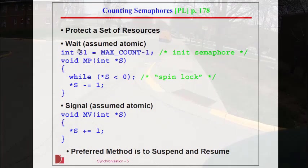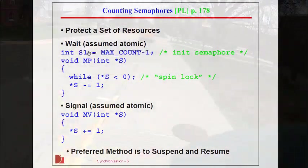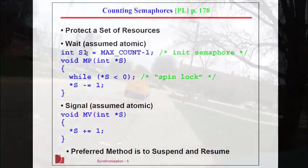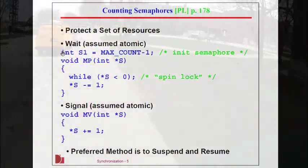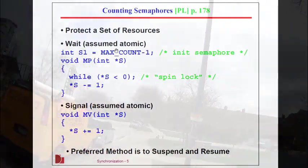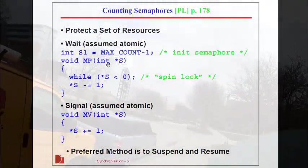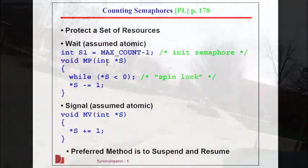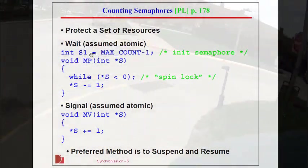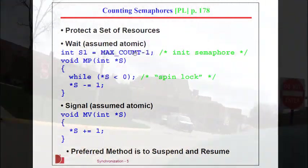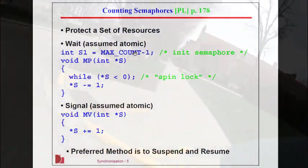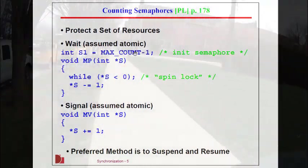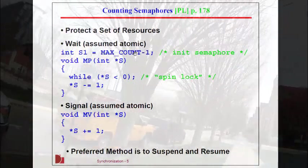Same thing happens with a counting semaphore, except we initialize it to max count minus one, as you see right here. We're assuming these are atomic, and so interrupts are set to off. So if it's binary, the max count is set to zero. If it is a counting semaphore of five, we would set it to four.